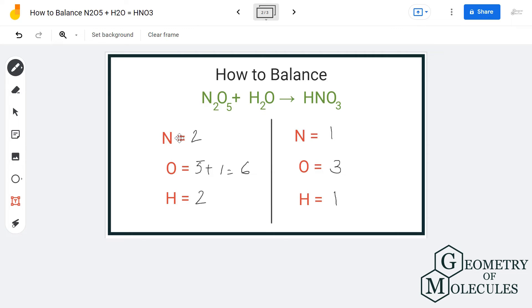If you can see the difference here, you just need to add a coefficient of 2 before HNO3 because that will actually help you balance this equation. Adding a coefficient of 2 before HNO3 will result in two nitrogen atoms on the product side.